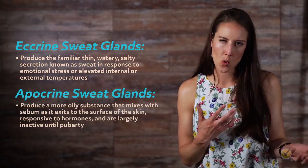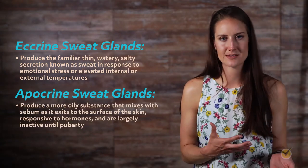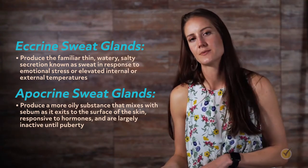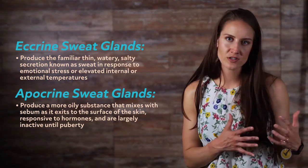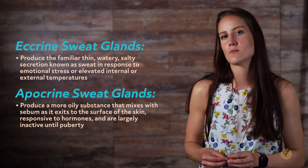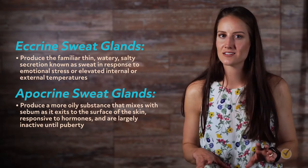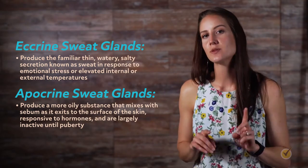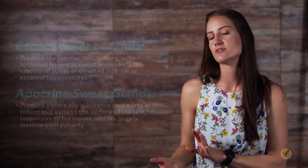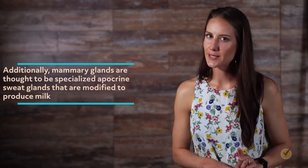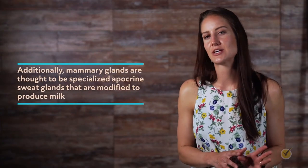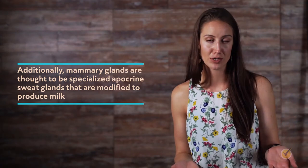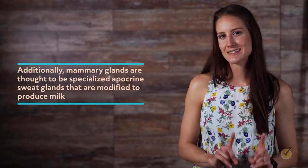Apocrine glands produce a more oily substance that mixes with sebum as it exits to the surface of the skin. Similar to sebaceous glands, apocrine glands are responsive to hormones and are largely inactive until puberty. Apocrine sweat is odorless, but can react with bacteria on the skin's surface to produce body odor. Additionally, mammary glands are thought to be specialized apocrine sweat glands that are modified to produce milk.